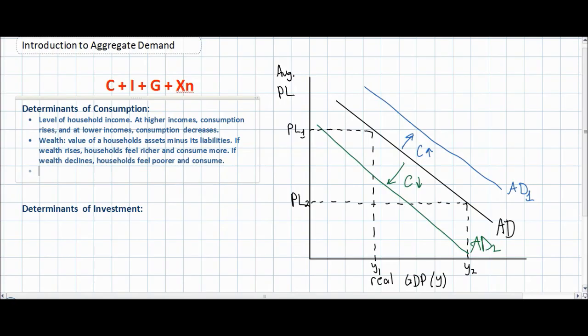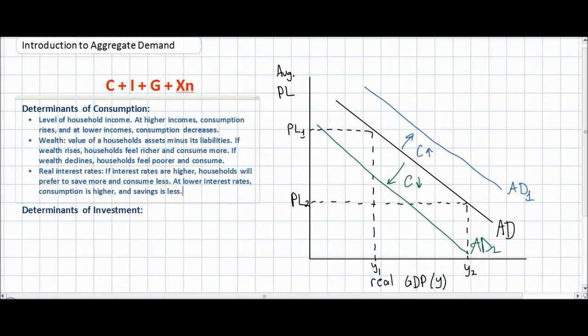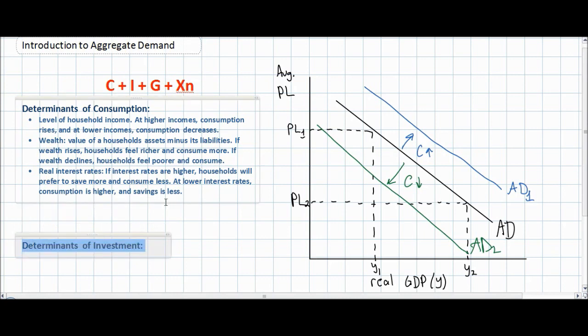The third determinant of aggregate demand is real interest rates. Interest refers to the return that a household can receive on saving money. At higher interest rates there is a greater incentive to save and less incentive to consume. At lower interest rates, households will prefer to borrow and consume big ticket items like cars or home improvements. At lower interest rates, households will save less, borrow more, and therefore consumption will increase.